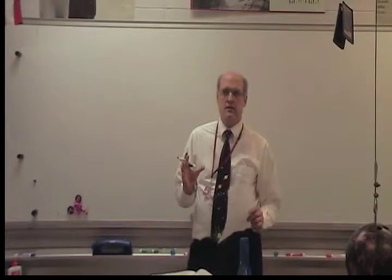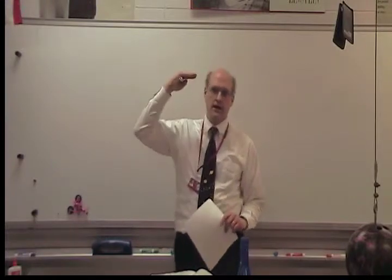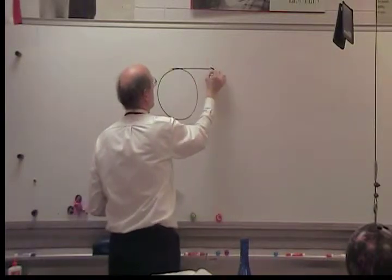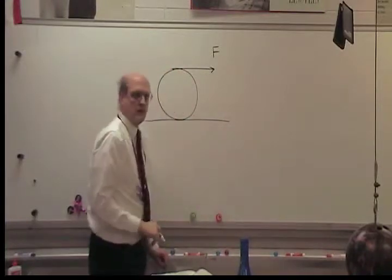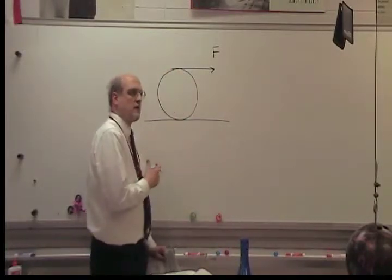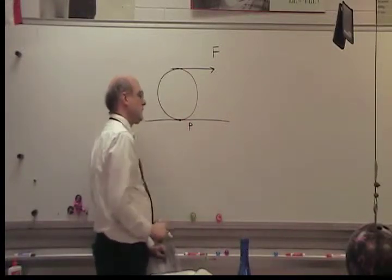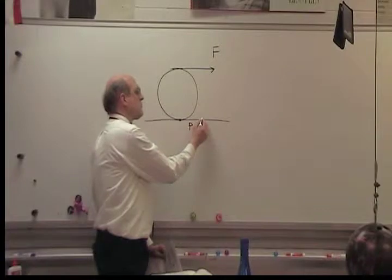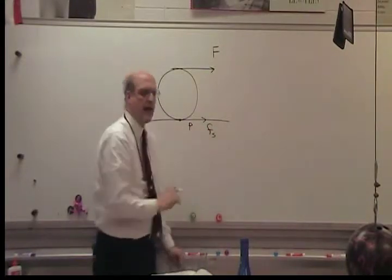Let's take a look at a problem where we have a disk rolling across the surface without slipping while a force is being applied at the top. What we're going to do is find the force of friction on the disk at the point of contact P. I'm going to take a guess that the force of friction is directed to the right — the force of static friction — and it would be static because there's no slipping.